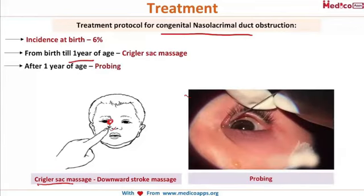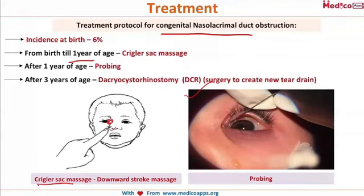After one year of age, the child's lacrimal pathway is probed with a lacrimal probe to clear any blockage. However, after three years of age, as the bony structure matures, the procedure called dacryocystorhinostomy (DCR) is performed — creating a new tear drainage opening. DCR is advised if the child presents after three years of age.